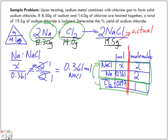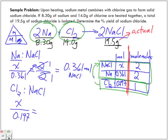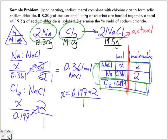But we're going to do the same thing now, but instead of sodium to sodium chloride, it's going to be chlorine gas to sodium chloride. So we have x over 0.197 equals 2 over 1. When we bring the 0.197 over, we get x moles of sodium chloride equals 0.197 times 2 over 1, which gives 0.394 moles of NaCl.